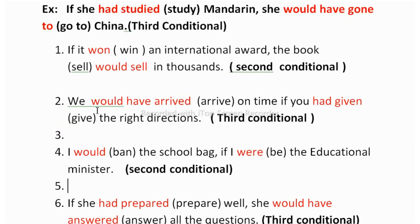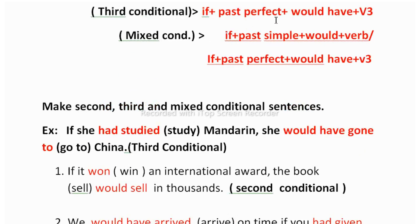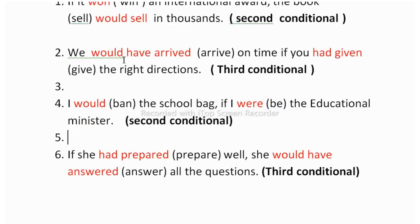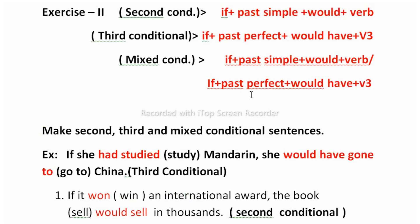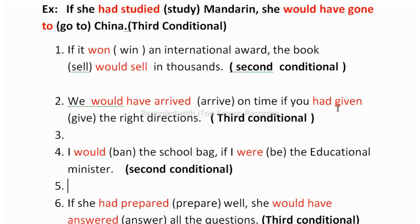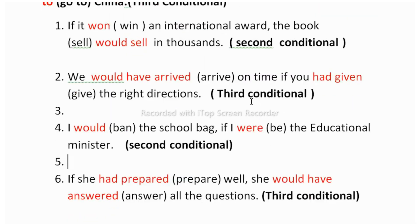The second one is: 'We dash arrive on time if you dash the right direction.' You have to add third conditional. Structure: if + past perfect + would have + V3. Here the main clause comes first: 'We would have arrived on time' — 'arrive' becomes 'arrived' (V3). Then the if clause: 'if you had given the right direction' — 'give' becomes 'given' (past perfect). Full sentence: 'We would have arrived on time if you had given the right direction.'